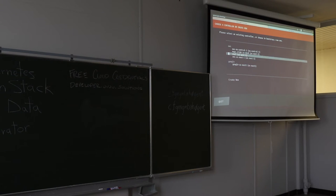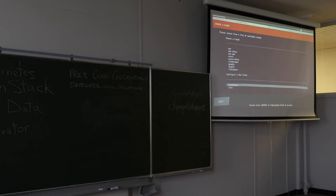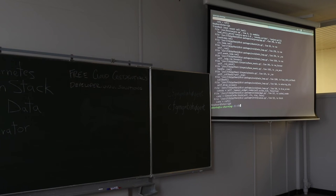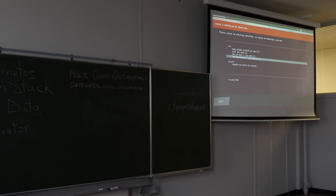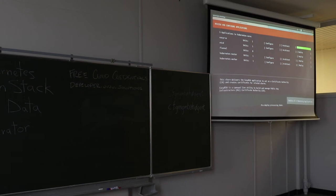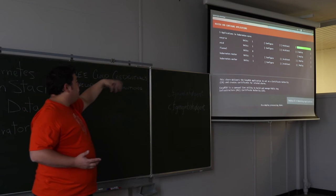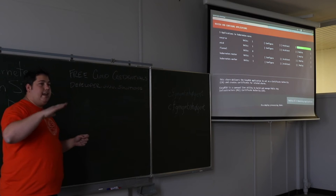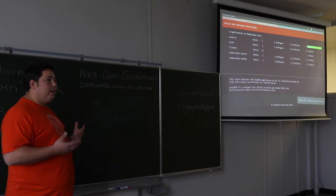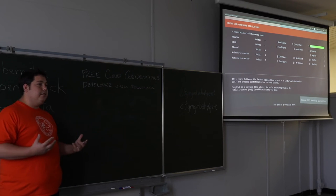The first thing ConjureUp asks is where to put this. I can add a new deployment on AWS, Azure, Cloud Sigma, Google, Rackspace, or my laptop. For the sake of time I'll run this on an existing deployment — EU Central 1, the Germany AWS region. It shows the components that comprise this application: Kubernetes Master (the API control plane), Kubernetes Worker (compute plane for Docker runs), Flannel (SDN overlay network for container communication), etcd (the distributed data store backing Kubernetes), and EasyRSA (private key infrastructure for generating valid TLS certificates to secure the cluster).